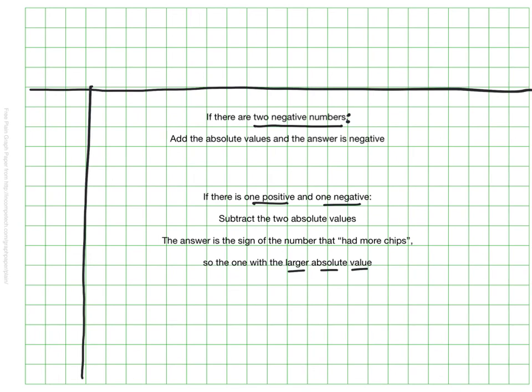Taking what we just saw and putting it into words that we can look back on later. If there are two negative numbers, we add the absolute values of the two, and the answer is negative. If there's one positive and one negative, we subtract the two absolute values. And here's where you have to pay attention. The answer is the sign of the number that sort of had more chips, the one with the larger absolute value. So I'm going to put two questions down. I want you to finish those so that I can see them on your notes.